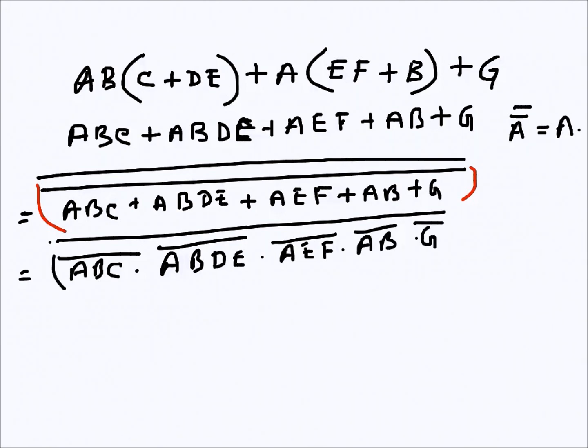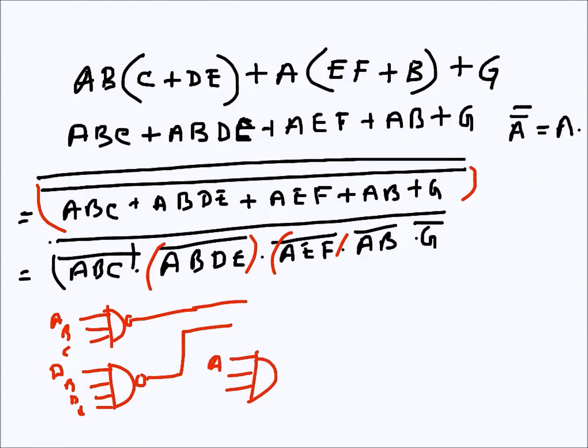Now this one is an AND gate, this is an AND gate, this is an AND gate—everything is an AND gate. So I will just draw the circuitry. Four inputs, so this is ABC here, ABDE here, so they are coming here. Then AEF here going there, then AB here.